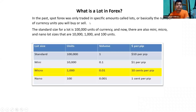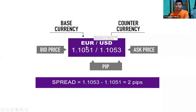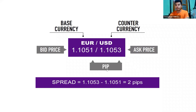Next, let's understand lot size. Lot sizes include standard lot size and micro lot size — these determine your trading volume. Related to this are pips, base currency, counter currency, bid price, ask price, and spread.